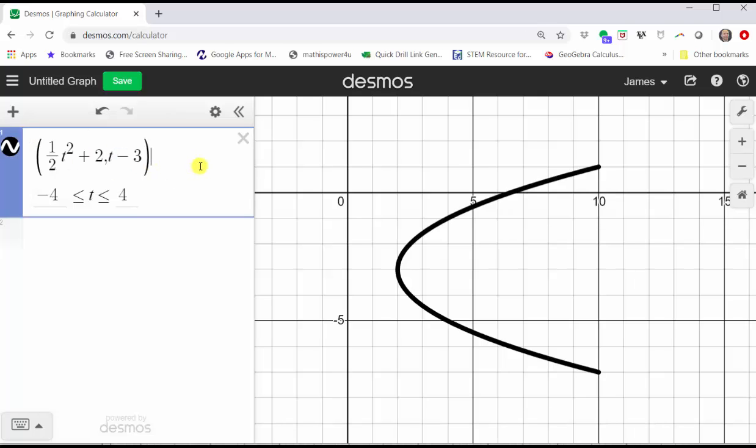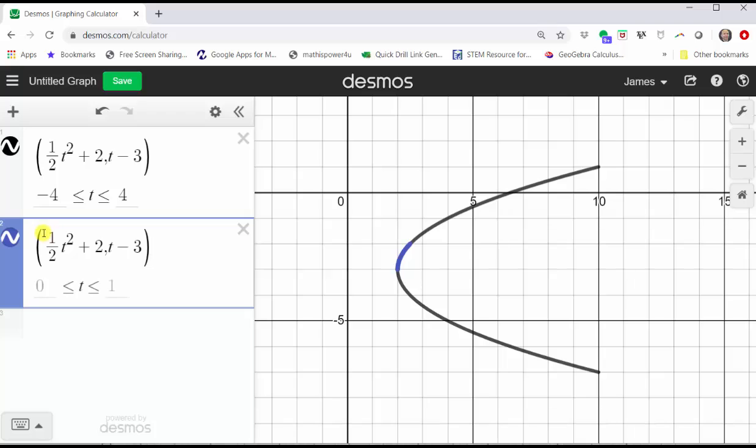And now let's create a slider so that we can see the orientation of the graph, which is the direction the graph is traced out as t increases from -4 to 4. To do this, we are going to copy the equations in cell 1 by highlighting the parametric equations, and then pressing Ctrl+C for copy. Go down to cell 2 and press Ctrl+V for paste. And now we are going to change the variable t to a different variable. Let's change t to a. So we change this t to a and this t to a. And then click add slider for a.